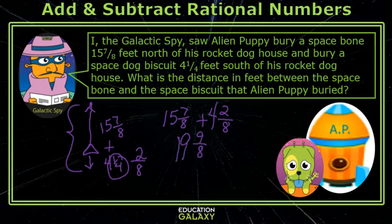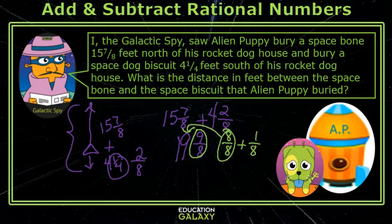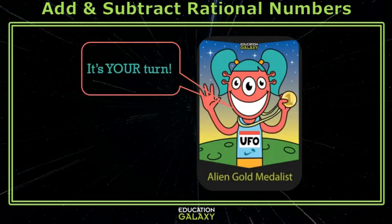Spy dude, you've got to regroup! 9 eighths is the same as 8 eighths plus 1 eighth — it's more than 1. So the 8 eighths adds 1 to the whole number. So I bury them 20 and 1 eighth feet apart. Okay kids, it's your turn to answer some questions. We'll see you next time!